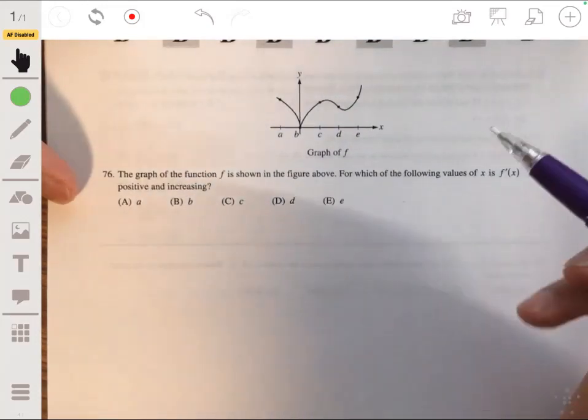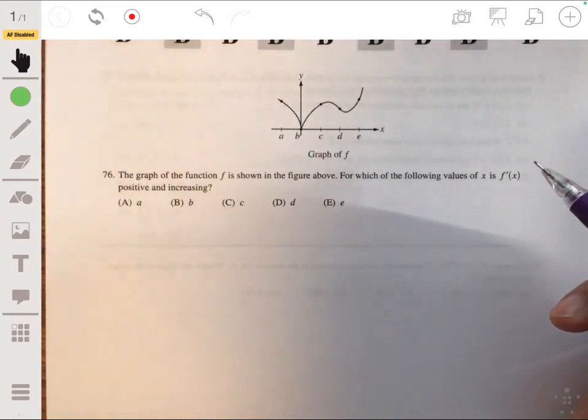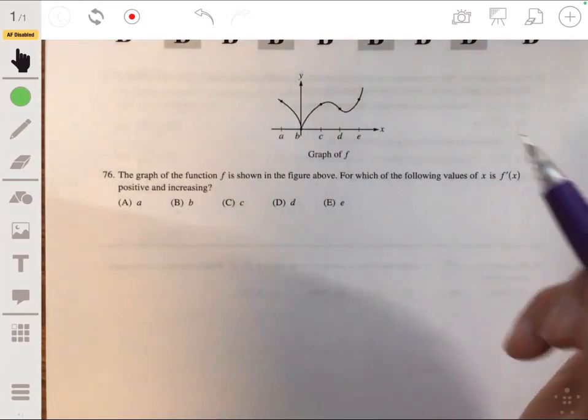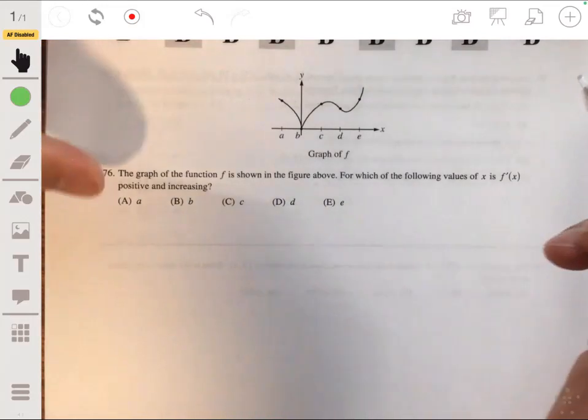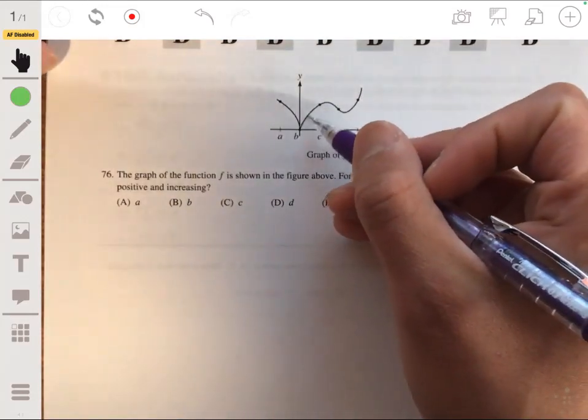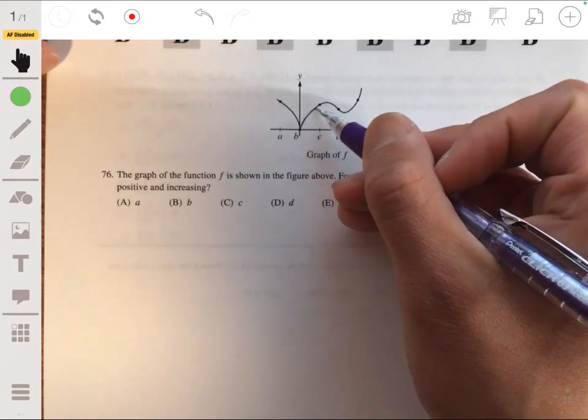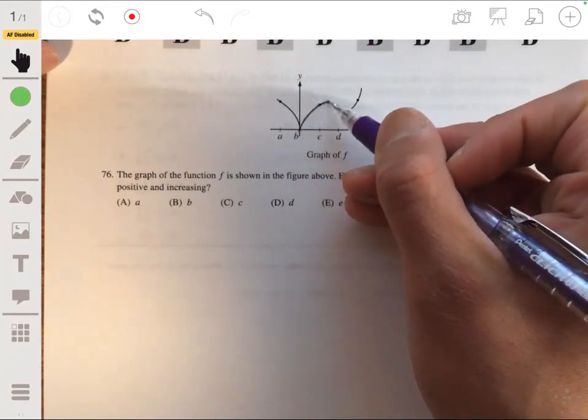Okay, so let's remember that the derivative of f, or f prime of x, will be positive when the function's increasing. So you can see the function is increasing like up to about here.